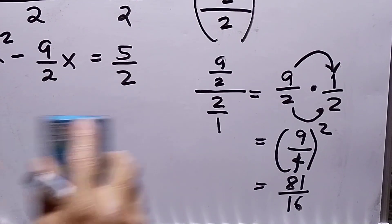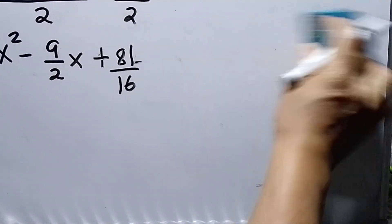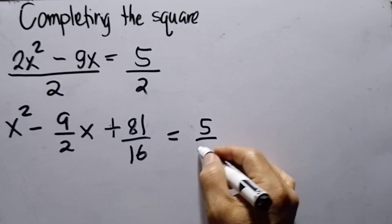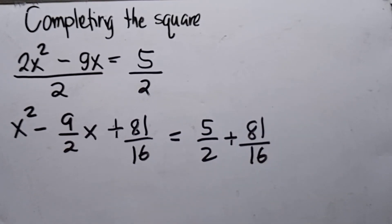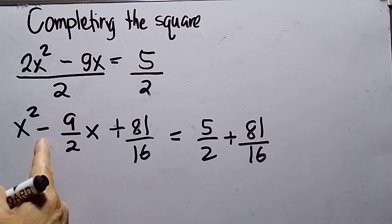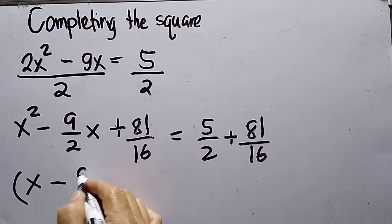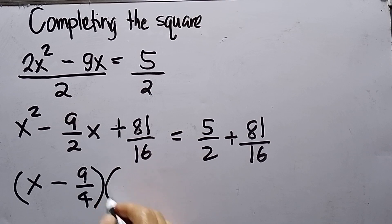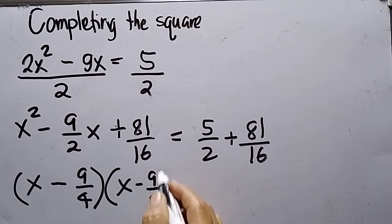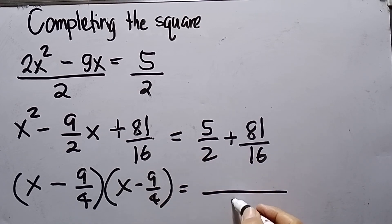So I need to add 81 over 16 to both sides — also at the right side. So this will be 5 over 2 plus 81 over 16. Then I need to factor the left side: x squared minus 9 over 2x plus 81 over 16. Since this is minus, I can write this as x minus 9 over 4, times x minus 9 over 4.